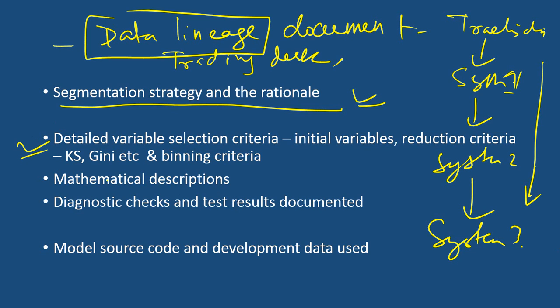The next item is detailed variable selection criteria. What are the indexes or criteria used — statistical criteria like KS statistics, Gini index, binning, and how the variables have been treated. All these things should be in the model validation document. If the model fails, there is a significant cost to rebuild it, it is time-consuming, and it comes under the scrutiny of model regulators.